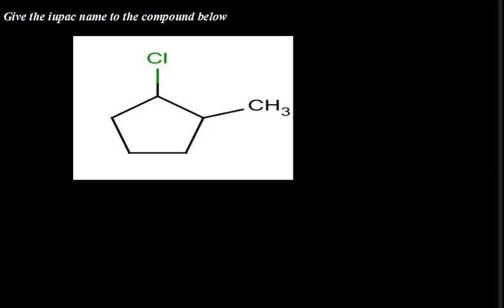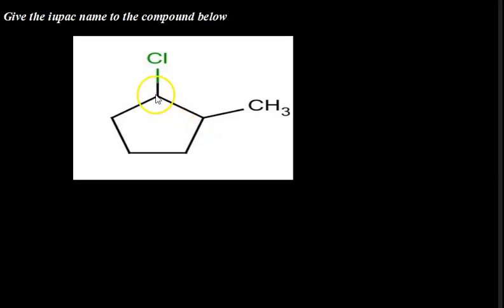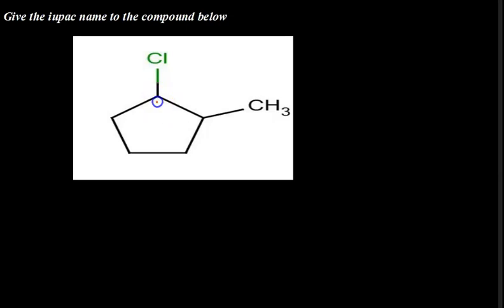Let's name this compound together. First, we have to count the number of carbons in this cyclocompound: one carbon here, two at this point, three here, four here, and five here. We have carbon atoms at each of those bridge points. We also have branches at two of these carbons — and we are going to number the carbons giving the lowest number to our branches.